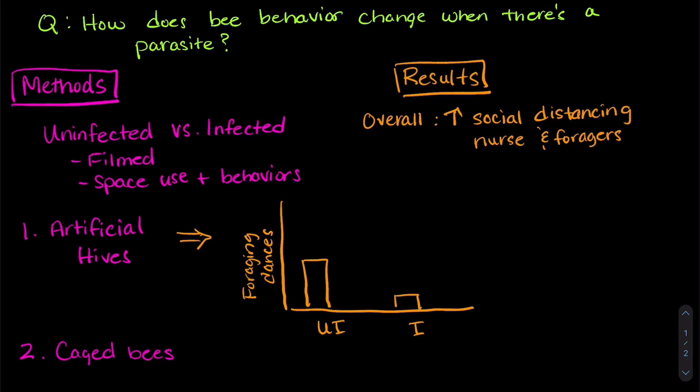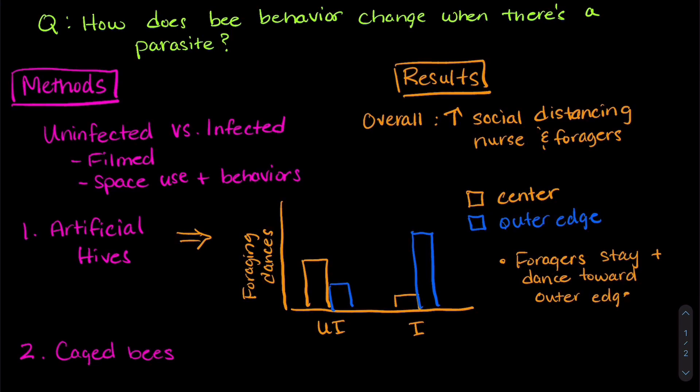In orange, you can see dances at the center of the hive and in blue, you can see dances at the outer edge of the hive. So it's easy to see that when the hive was infected with the mite, the foragers danced more on the outer edge of the hive.